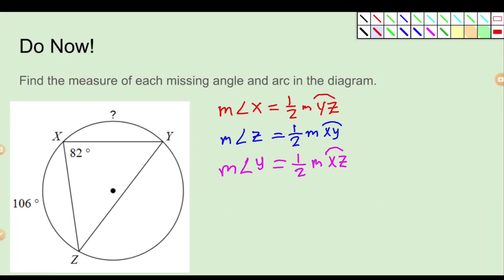Let's warm up. Find the measure of each missing angle and arc in the diagram. I wrote three relationships here. Because these are inscribed angles, we have this relationship we should know between the inscribed angle and its intercepted arc. So I know all of these are inscribed angles.